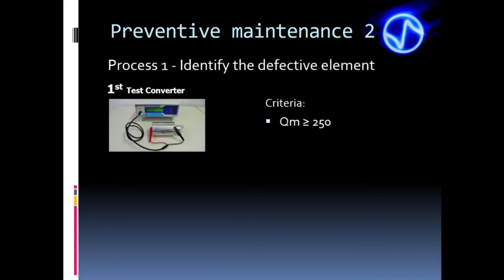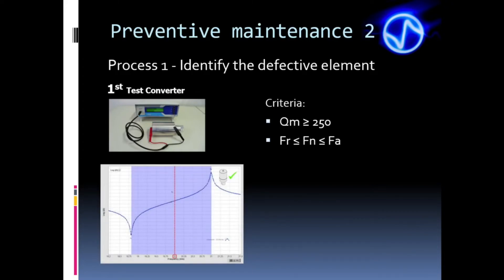To explain this in a simple way, QM is the number of times that tested element vibrates by itself by inertia after turning off the generator. Therefore, the higher the QM, the more easily and efficiently the stack vibrates. The second criterion is related to the resonance and anti-resonance frequencies of the converter and also with the nominal operating frequency of the machine. The interval between FR and FA must contain the nominal frequency of the machine.